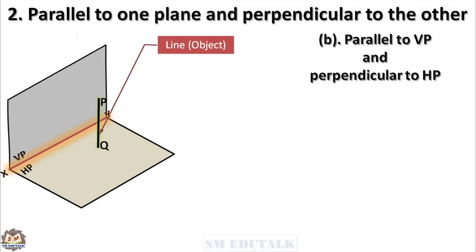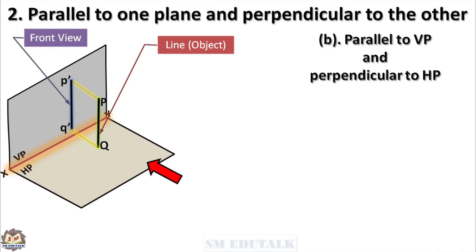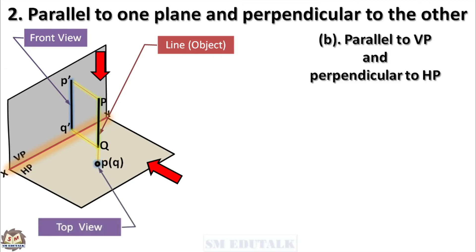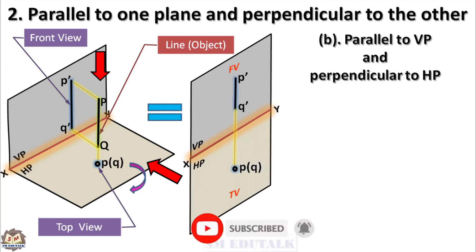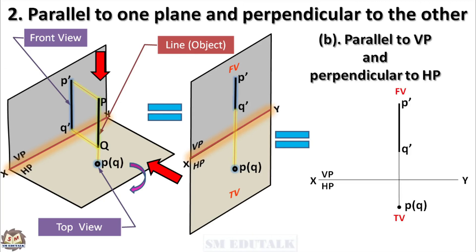The second subtype is parallel to VP and perpendicular to HP. The line PQ is kept parallel to VP and perpendicular to HP in the first quadrant. Its front view is projected as a line P'Q' to the VP, and the top view is projected as a point p(q) to the HP — where p represents the visible endpoint and (q) represents the invisible endpoint. After rotating the HP 90 degrees, both views are on the same plane. The front view P'Q' should be drawn first because its length equals the known length of the given line PQ. Then project the front view below the XY line to get the top view.